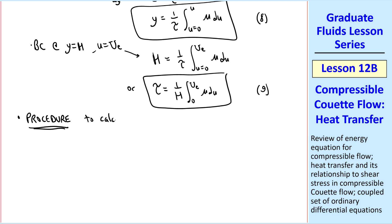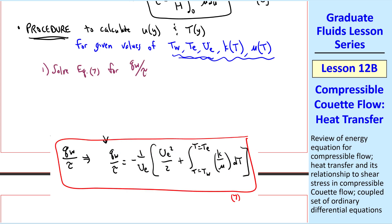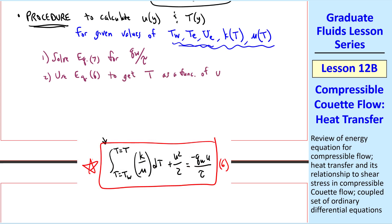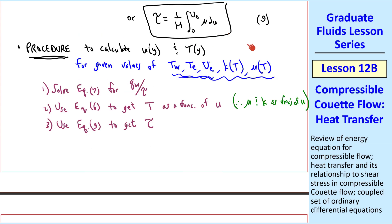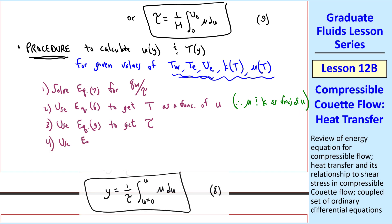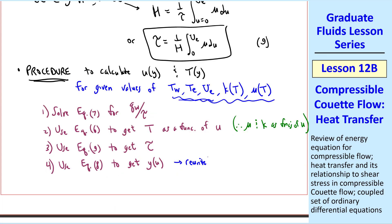We're almost done, we have all these equations, but here's the procedure to actually calculate u of y and t of y for given values of tw, te, ue, and the functional forms of k and mu as functions of temperature. If we know all these, the procedure is to first solve equation 7 for the constant qw over tau, use equation 6 to get temperature as a function of u, and I'll note on the side, therefore mu and k also as functions of u. Use equation 9 to get tau, which we can now do because mu is a known function of u, and then finally use equation 8 to get y of u, which we should now also be able to do since mu is a known function of u from step 2. And then in the end, finally, we rewrite y of u as u of y. And from step 2, we can also get t of y.